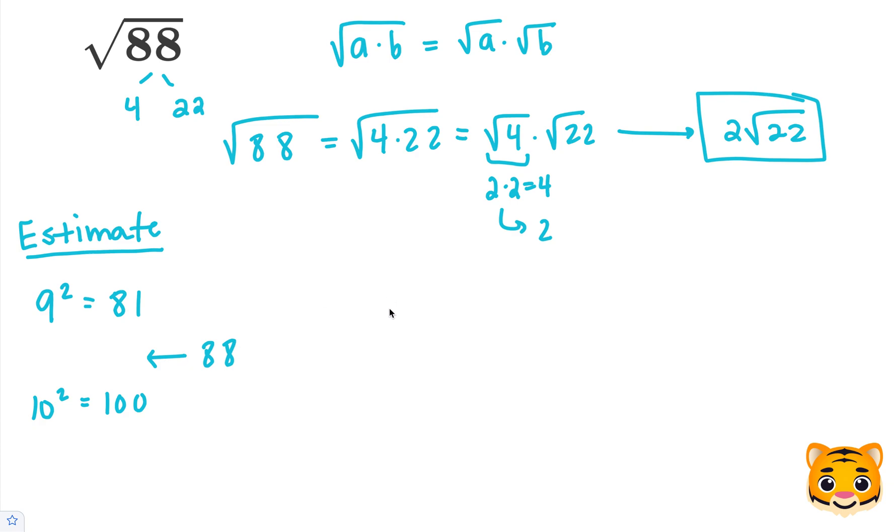Using this information, we can write the following inequality: the square root of 81 is less than the square root of 88, which is less than the square root of 100. We can write this because 81 is less than 88, which is less than 100.